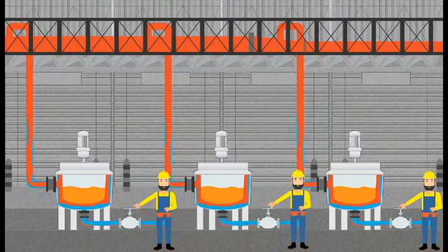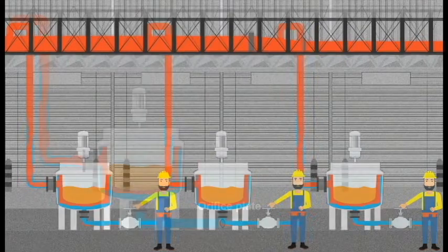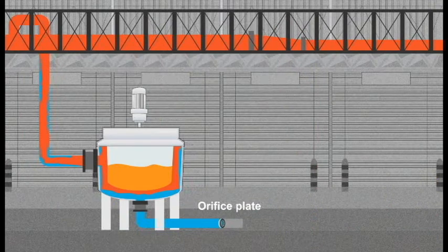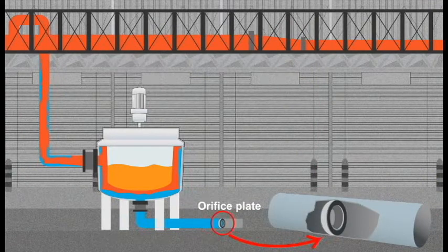Now, instead of a valve, you could also use an orifice plate to remove condensate. An orifice plate is simply fixed at the equipment outlet and it eliminates the need to manually open and close the valves.